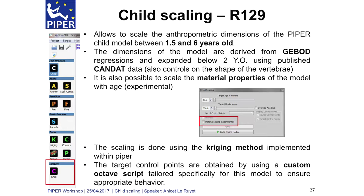There is also an option to scale the material properties, which was already mentioned previously. This option needs to be more tested — for now, it's still experimental. The scaling is done using the anchoring method implemented within Piper. For this menu, the target control points are obtained from an Octave script that is delivered with the application. In this script, the linear regression functions are already computed and implemented.